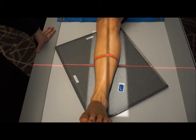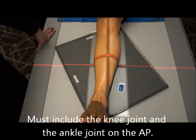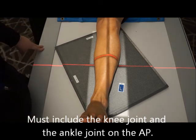This is a two-view lower leg or tib-fib, tibia and fibula. On this particular image you have to make sure that you're getting the knee joint and the ankle joint. So we have to find a happy medium.